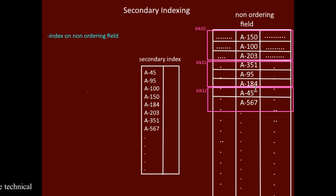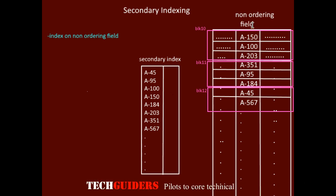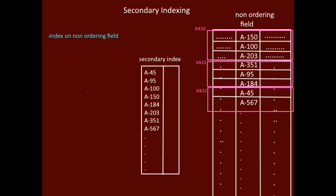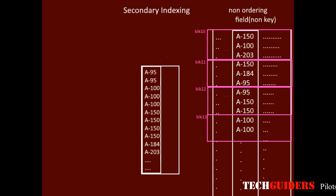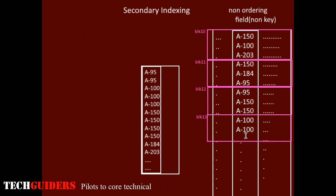The file is unordered according to the index search key, but the index will always be ordered. This non-ordering field can be a key field for which every data record has a unique value, or it may be a non-key field for which multiple records may have the same value.